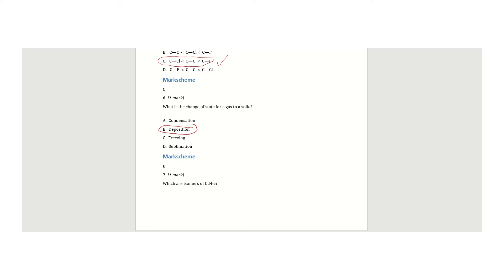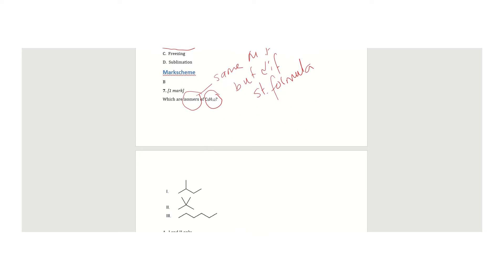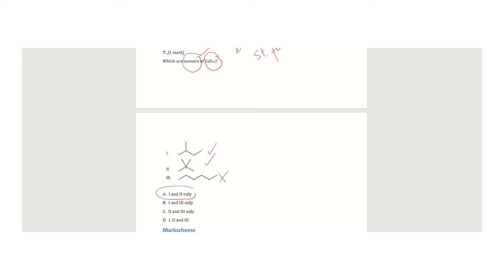The next question, for topic ten, asks which are isomers of C₅H₁₂. Isomers have the same molecular formula but different structural formulas, which means the correct number of atoms must always be present. Looking at the skeletal structures, I count the total number of carbon atoms in each option. The first option has 5 carbons — correct. The second also has 5 carbons — correct. The third has 6 carbons, making it hexane — incorrect. So the correct answer is options one and two only.